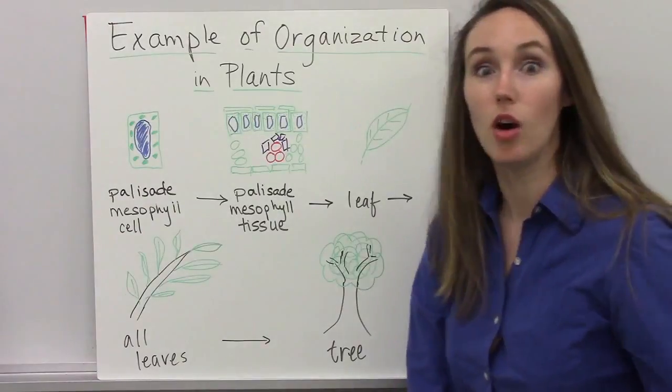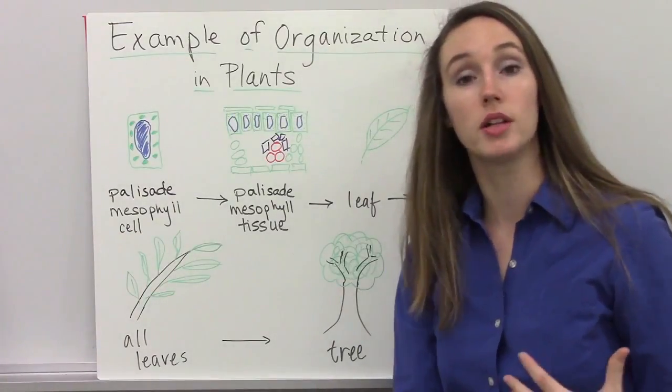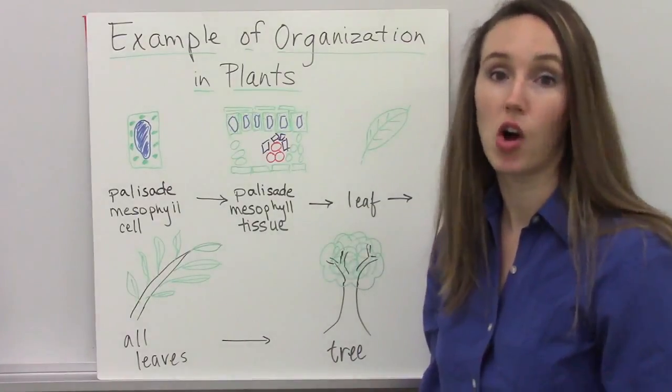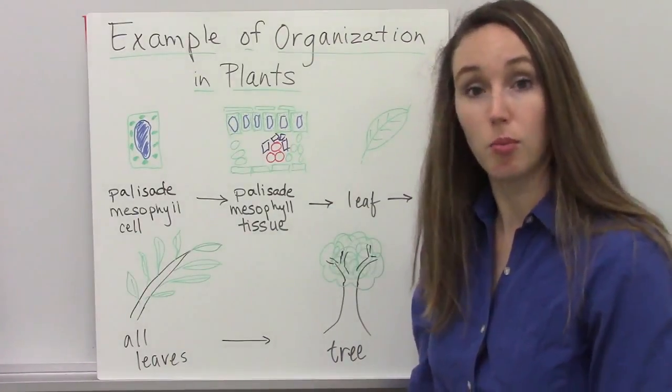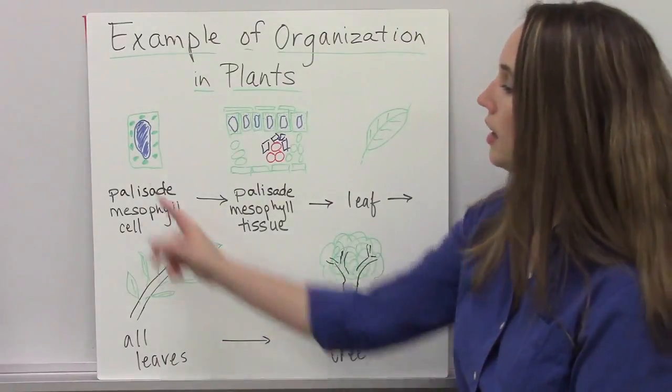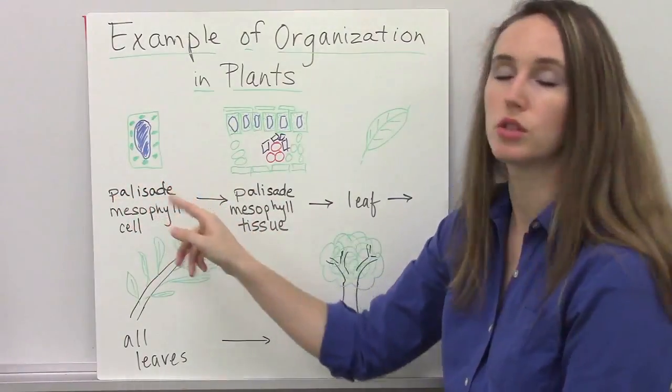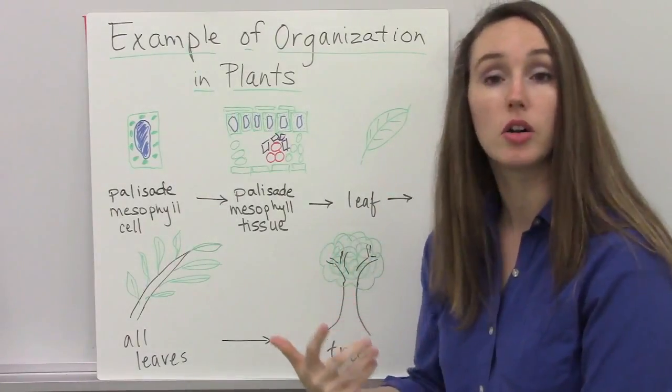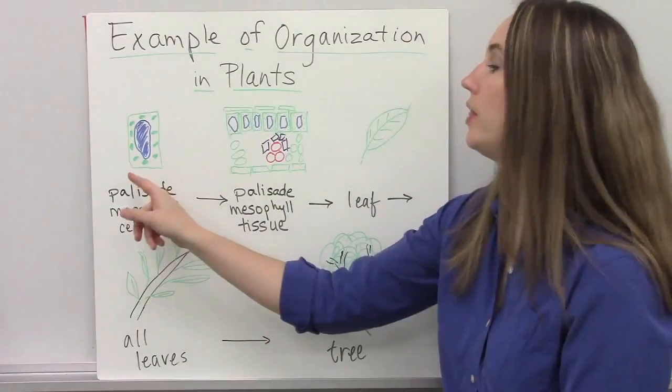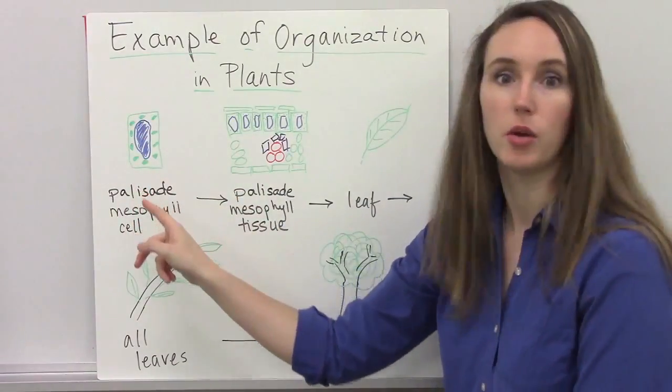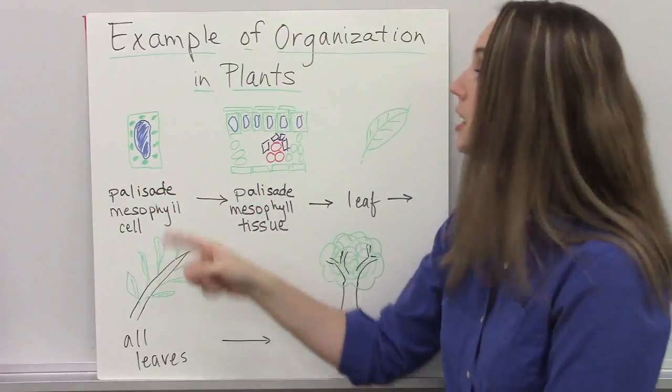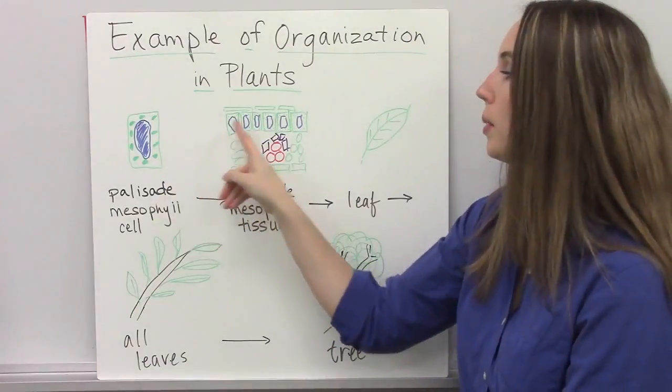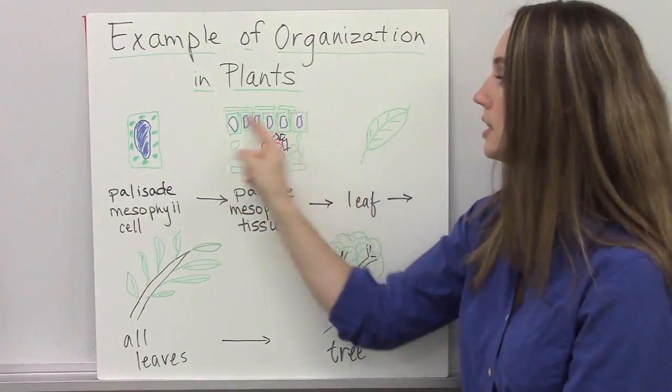Animals are not the only multicellular eukaryotic organisms that are divided into the levels of organization. Plants and fungi are as well. And we're going to look at an example of plants. There are specific types of cells in leaves whose main job is to do photosynthesis. These are called palisade mesophyll cells. And they are your basic plant cell that you always see in any biology book. And when you put these palisade mesophyll cells together, they form the palisade layer within the leaf.